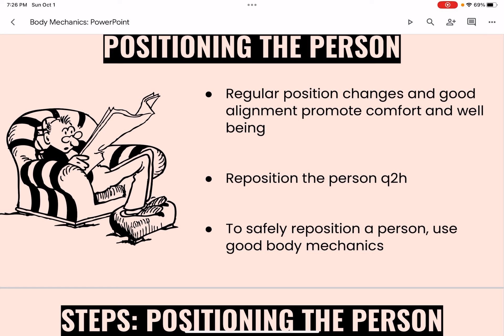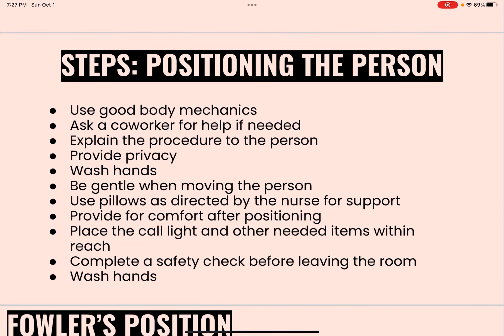To safely reposition a person, it's important for the CNA to use good body mechanics and ask a co-worker for help if needed. Explain the procedure to the person, provide privacy, and wash hands. Be gentle when moving the person and use pillows as directed by the nurse for support. Provide for comfort after positioning, place the call light and other needed items within reach, complete a safety check before leaving the room, and wash hands. Questions you could ask while repositioning include: 'Am I hurting you?', 'Please tell me if I'm moving you too fast', 'Please tell me if you feel pain or discomfort', 'Do you need a pillow adjusted?', and 'Are you comfortable — how can I make you more comfortable?'